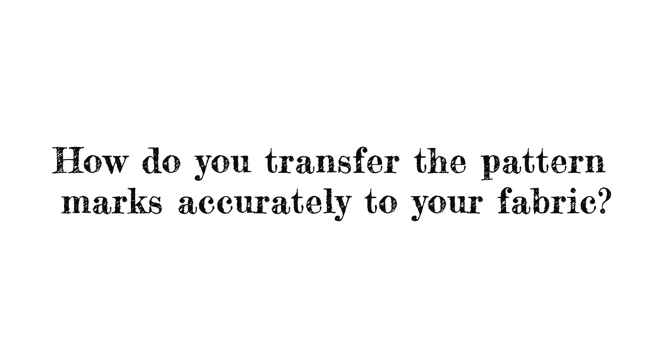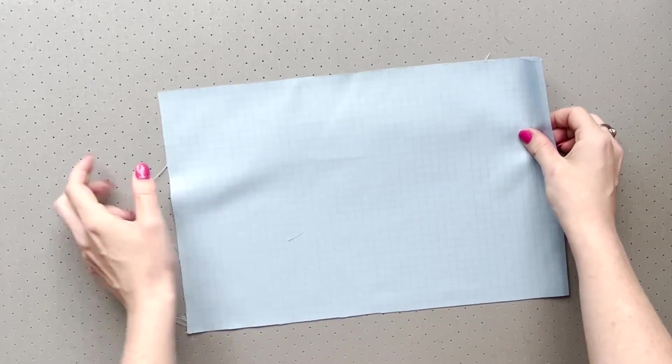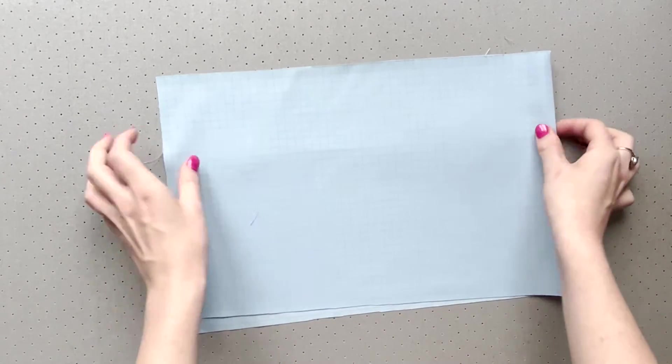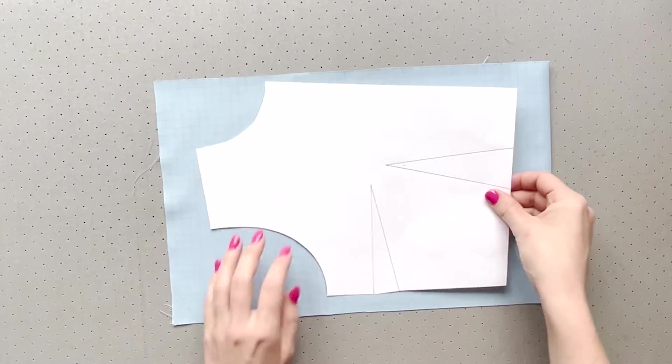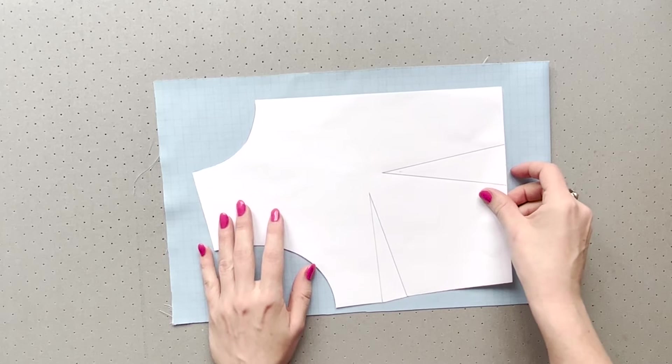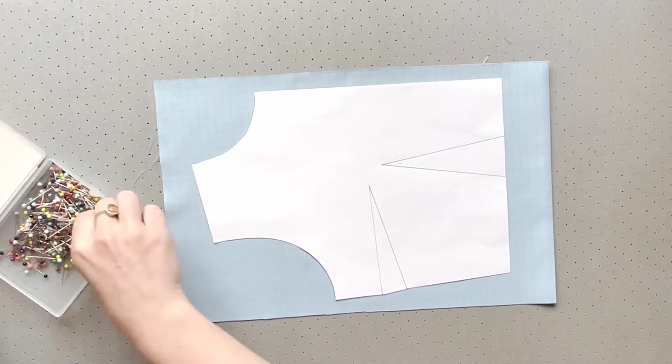There are many ways to transfer pattern markings to fabric and you can use the method you currently do for sewing pattern marks. Use the method you're comfortable with. I'll take you through a couple here to give you options. If you don't need to know this feel free to skip ahead to the construction phase below.